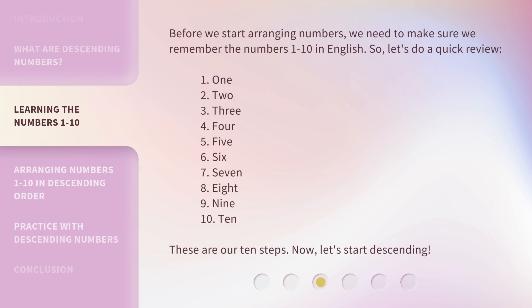Before we start arranging numbers, we need to make sure we remember the numbers 1 to 10 in English. So let's do a quick review: 1, 2, 3, 4, 5, 6, 7, 8, 9, 10. These are our 10 steps. Now let's start descending.